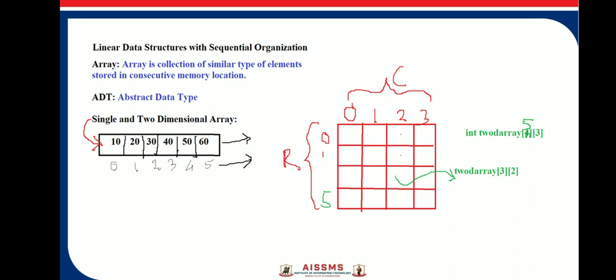For example, if we want to store names of students in a class, we can make use of an array to store the names in sequential form. Simply, an array is a set of consecutive memory locations which contains similar data elements.